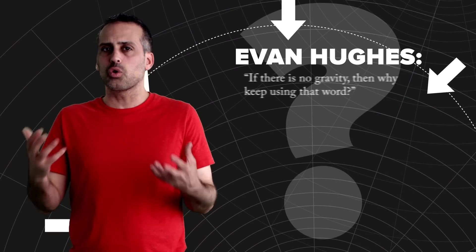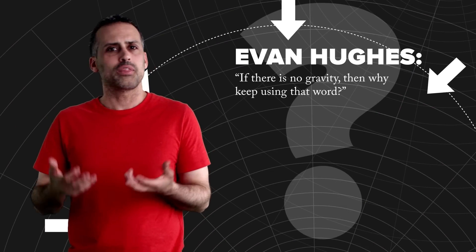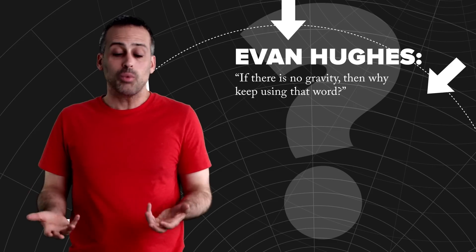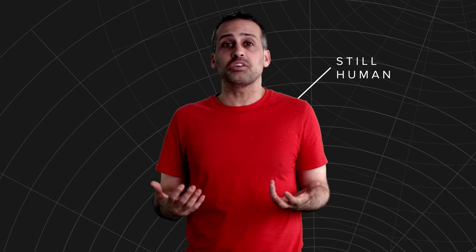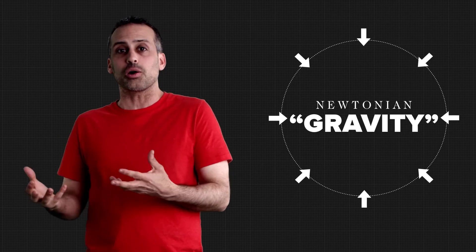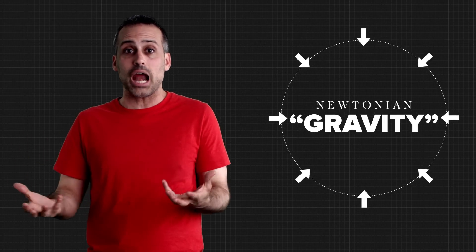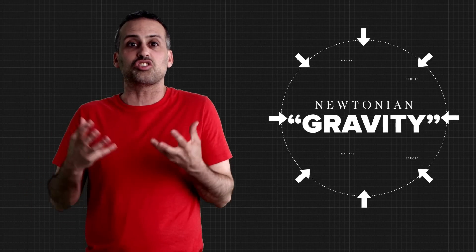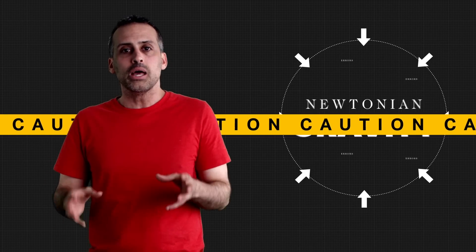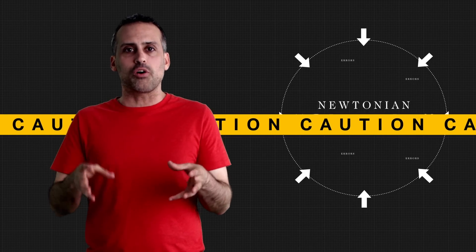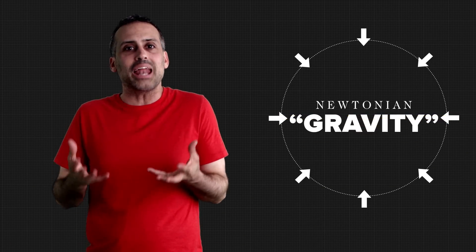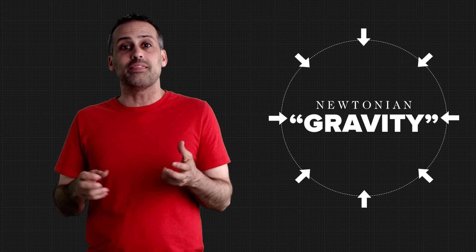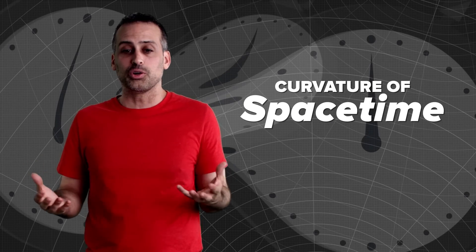I want to conclude with a question once asked by one of our viewers, Evan Hughes. If there's no gravity, and gravity is not a force, then why do we keep using that word? Well, physicists are still human. As far as I know, most of us have no special ability to visualize or directly experience 4D spacetime. So we often think in Newtonian gravitational terms because it's easier and because the resulting errors are usually small. We just remind ourselves that it's just a crutch that we have to use with caution. But even when people are referring to relativity or string theory or whatever, it's just a lot easier to say the word gravity than to say curvature 4D spacetime.